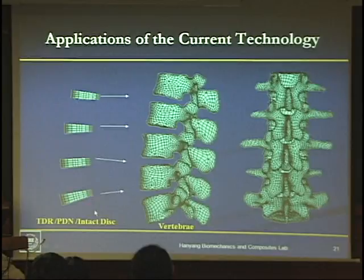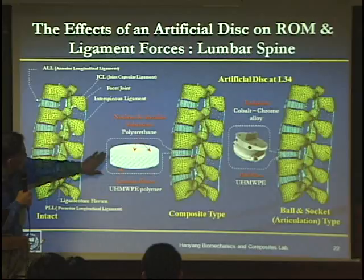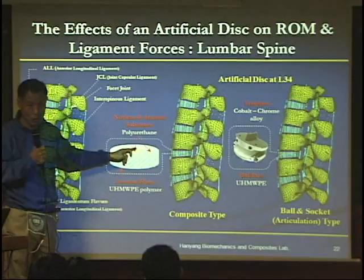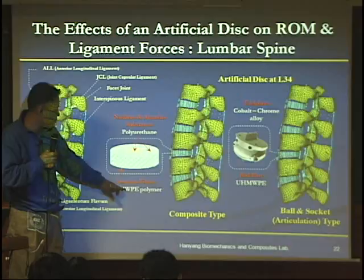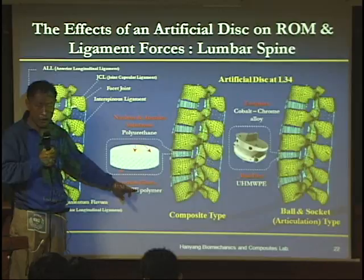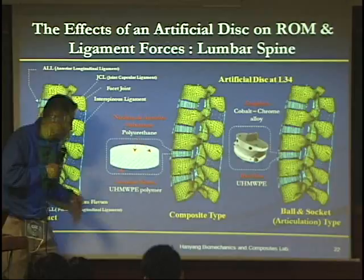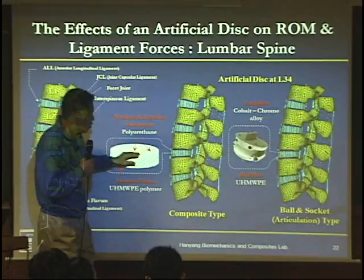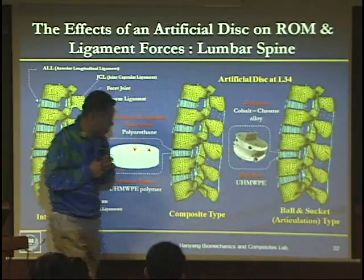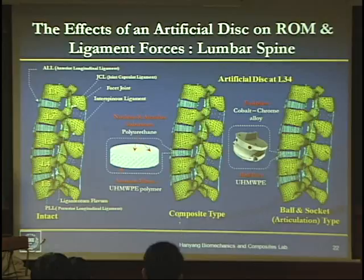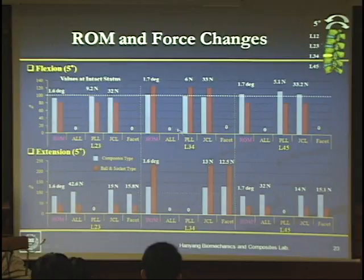The M6 disc is made of UHMWPE — Ultra High Molecular Weight Polyethylene — fibers in a polyurethane core. We can compare the ProDisc ball-and-socket joint with our composite fiber design. The composite M6 is the type we developed, and we can see all the comparisons between the two approaches.